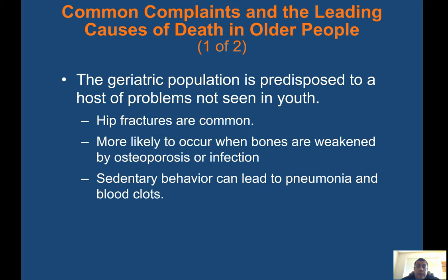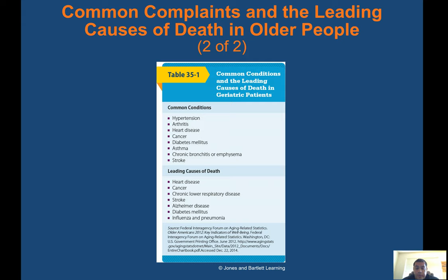Common complaints and leading causes of death in older people: the geriatric population is predisposed to a host of problems not seen in youth. Hip fractures are common and more likely to occur when bones are weakened by osteoporosis or infection. Sedentary behavior can lead to pneumonia and blood clots. Common conditions in geriatric patients include hypertension, arthritis, heart disease, cancer, diabetes, asthma, chronic bronchitis or emphysema, and stroke, which also align with the leading causes of death in this population.